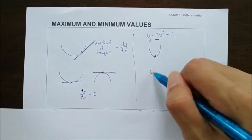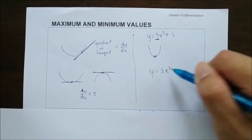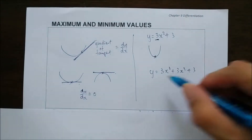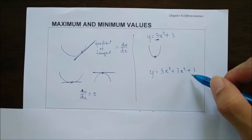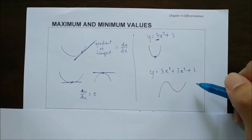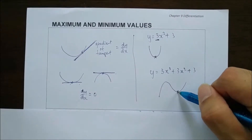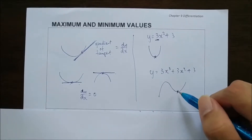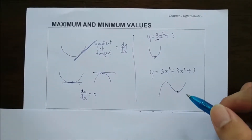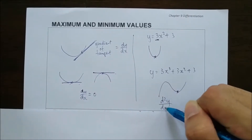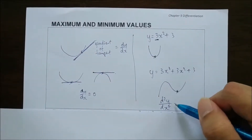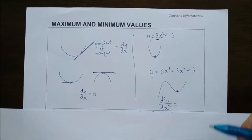But if it is a curve such as y = 3x³ + 3x² + 3, a cubic equation generally has two turning points. So if you get the value of one of the points, we might not know whether it is a maximum or minimum point. In that case, we need to differentiate twice — meaning find the second derivative of y, or d²y/dx² — in order to determine whether it is a maximum or minimum point.